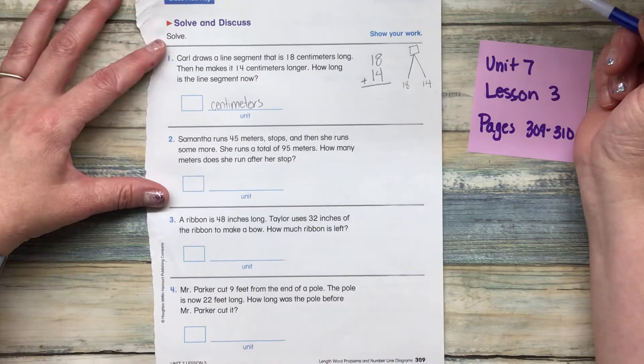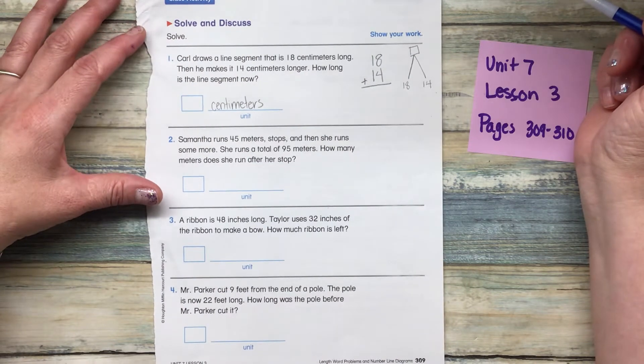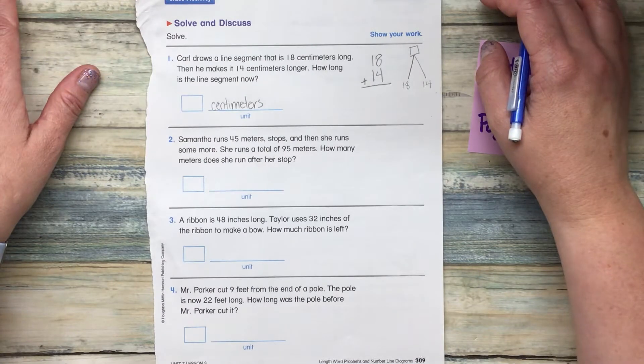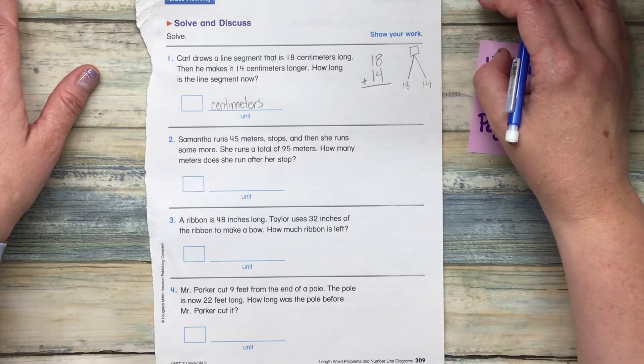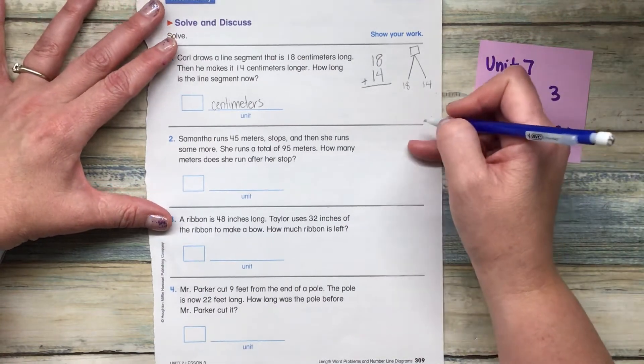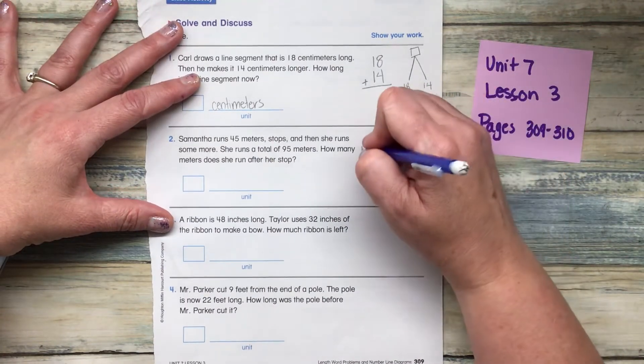Make sure that you include the labels and show me your work. Number two says, Samantha runs 45 meters. Stops. And then she runs some more. She runs a total of 95 meters. How many meters does she run after her stop?